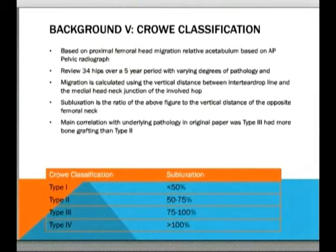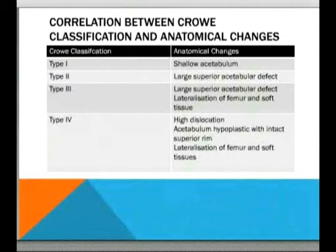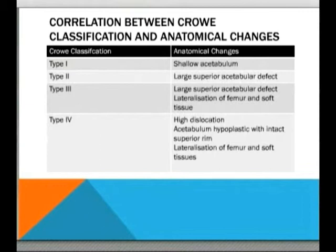Correlations have subsequently been found between the Crowe classification subluxation and what is seen intraoperatively. Type one — mild subluxation — has a shallow acetabulum. Types two and three develop a superior acetabular defect, and in type three the femur and surrounding soft tissues are lateralized. In type four there is a high dislocation; the remaining true acetabulum is hypoplastic with an intact superior rim, and the femur and soft tissues are lateral.